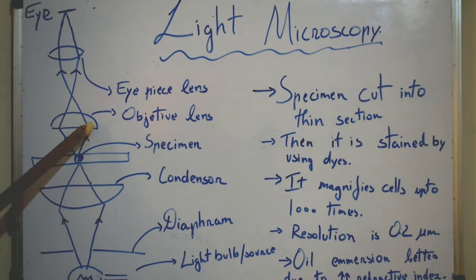So from the specimen the light rays pass through the objective lens and then through eyepiece they reach the eye where a magnified image is formed.